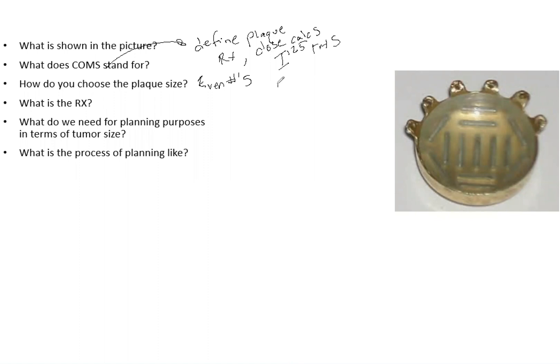For example, let's say the tumor radial distance is 14 millimeters. That means you're going to add two millimeters to both sides. If that is the tumor, you're going to add two millimeters here and two millimeters here. Essentially, you're adding four millimeters total - two and two on each side - and your plaque size is going to be 18 millimeters, which is even.